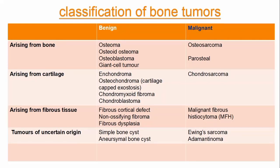For those of uncertain origin, in the benign form we have simple bone cyst and aneurysmal bone cyst. Their malignant form includes Ewing's sarcoma and adamantinoma.